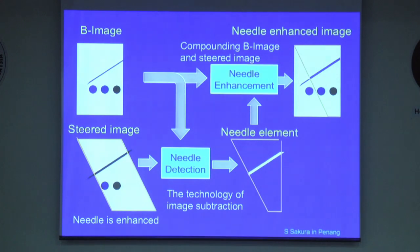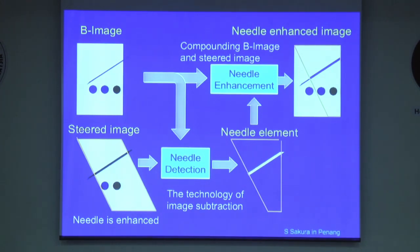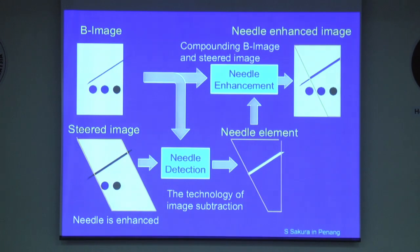To overcome this situation, many ultrasound companies have developed ways to create a needle-enhanced image. I'm not entirely sure I understand it very well, but let me try explaining the basics. With simple beam mode, the reflected echo from the needle goes away from the transducer, so that you could barely see the needle — only tissues.